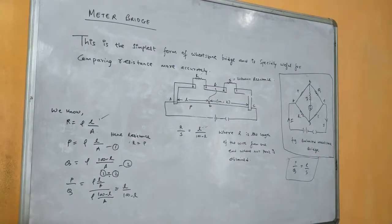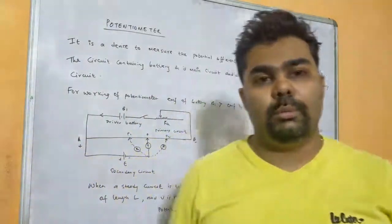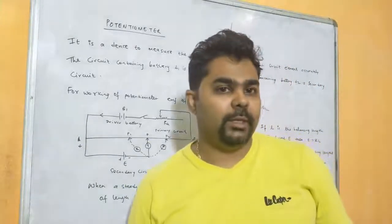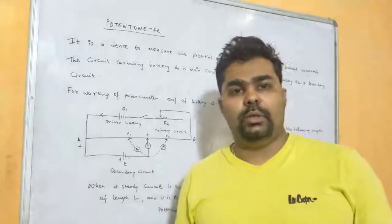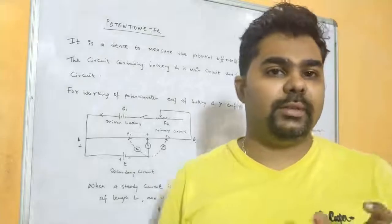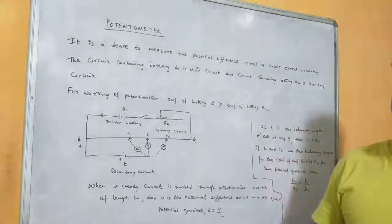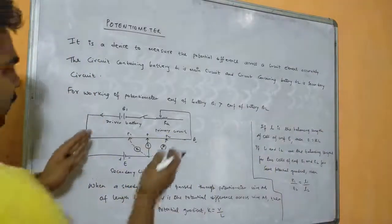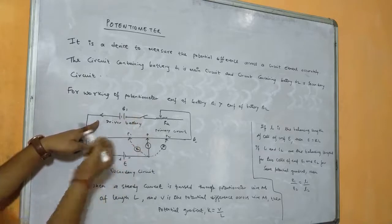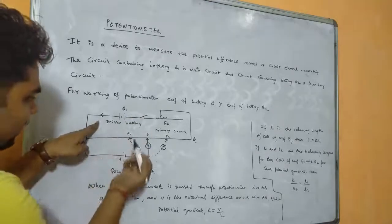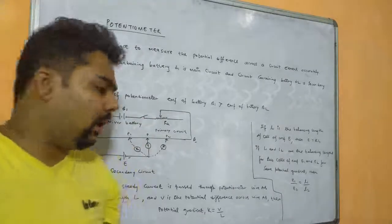Next we have the potentiometer. A potentiometer is a device used to measure potential difference accurately. You might wonder about the voltmeter — the voltmeter also calculates potential drop, but the potentiometer does it more accurately and is more sensitive. It has two circuits: a primary circuit with a driver cell (B1), and a secondary circuit with a secondary battery (E).